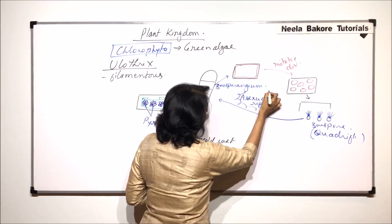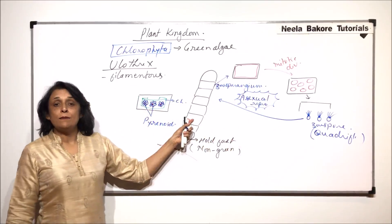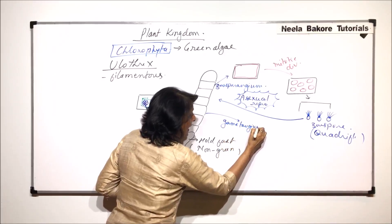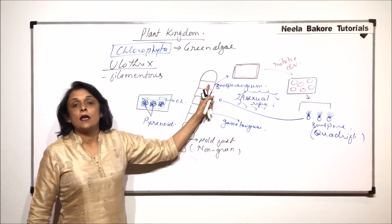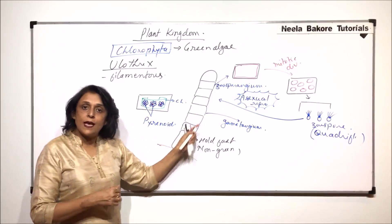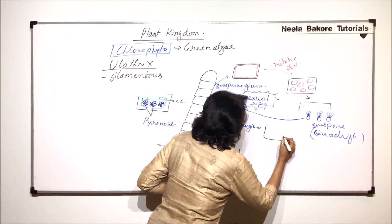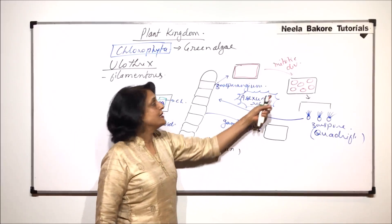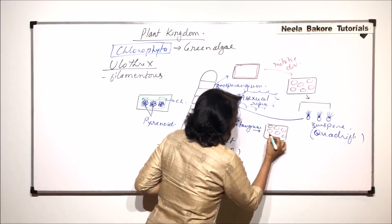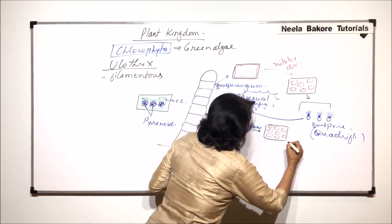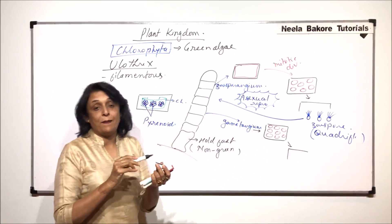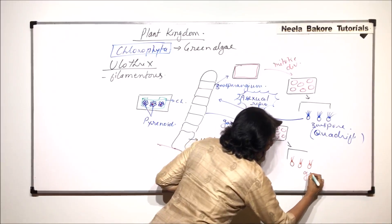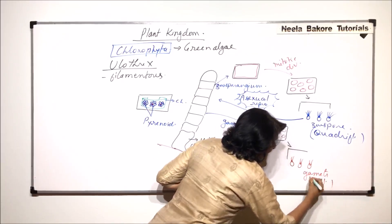Now if we have to understand how this sexual reproduction is going to take place, then some cell is going to act as a gametangium. That means in this gametes would be formed. This cell was acting as zoosporangium, and some cell is acting as gametangium. So say this is the cell which is acting as gametangium. Now what happens here is gametes are formed. The method is exactly same as that of zoospore formation. So protoplast divides and finally this gametangium will rupture releasing the gametes. The gametes are smaller and they are biflagellate.